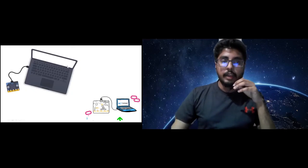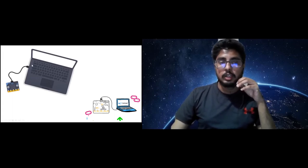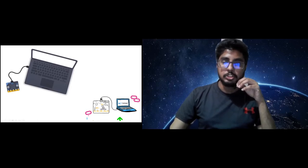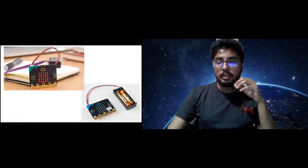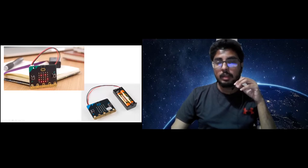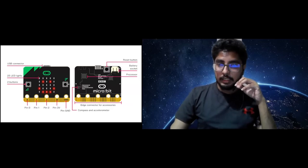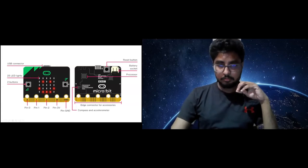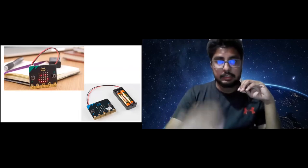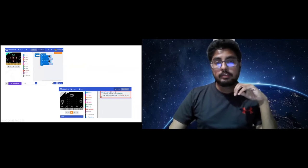To program the microbit you can use your own computer — use a USB cable to plug into your computer and into the microbit device. Once it's programmed, you can connect some batteries and run the program on your microbit without connecting it to the computer — it will work standalone. There is a small battery connector, so once you plug in batteries you can run the program without any support from a computer.